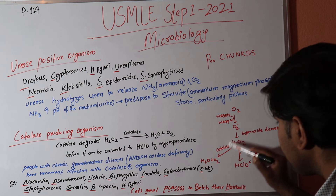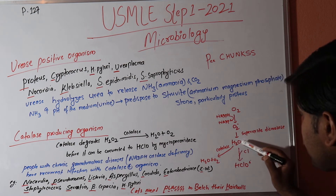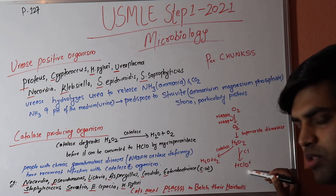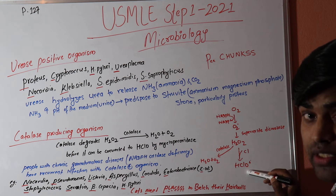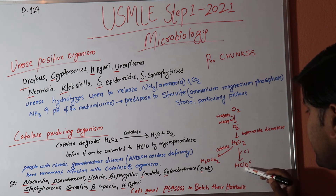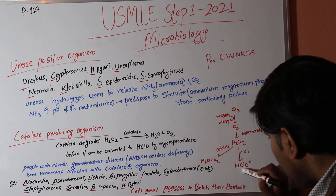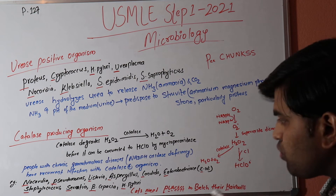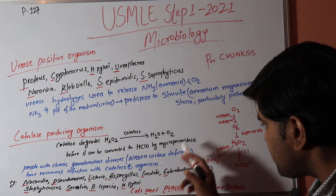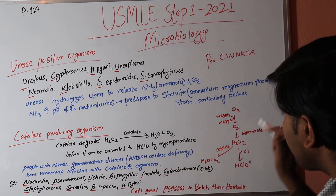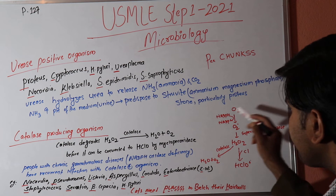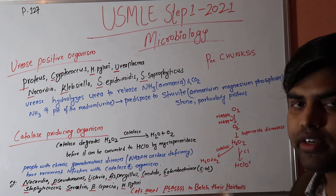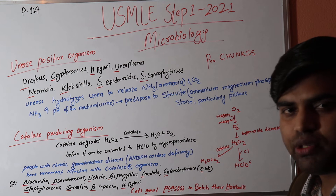With NADPH oxidase deficiency, the macrophage has defective killing ability and cannot kill bacteria inside. However, the macrophage is clever: it can utilize the oxygen produced as a byproduct of bacterial respiration.